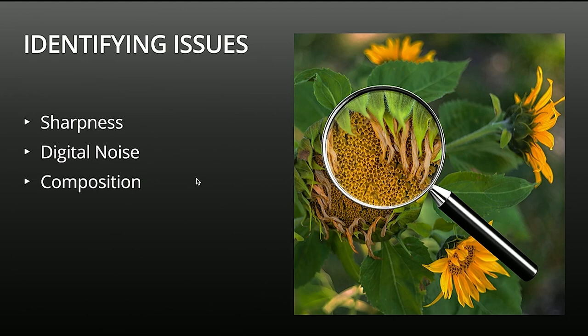You're not going to be able to fix something that's completely blurred. So if you're shooting at f/2.8 and you focused on the flower but actually wanted to focus on the background, software isn't quite there yet. But if a little bit of wind caused the flower to drift slightly, we can do a lot to improve it. Sometimes it's not perfect, but it can get you close enough to have a usable image.